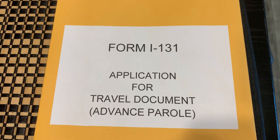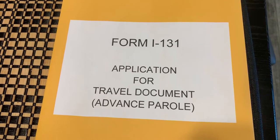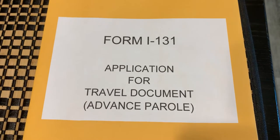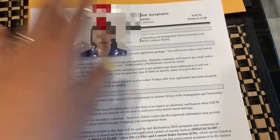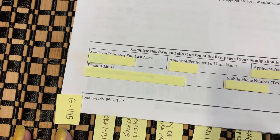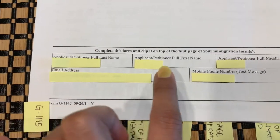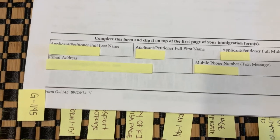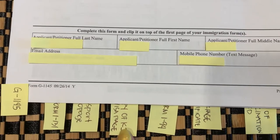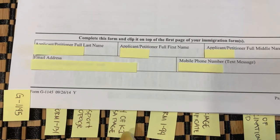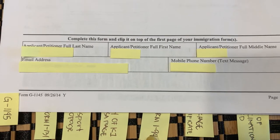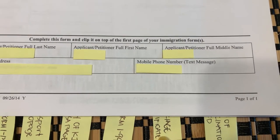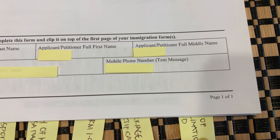Next is Form I-131, the Application for Travel Document or Advance Parole. The contents of this folder: first, my photo on the front page, then the G-1145 form with my information. After that is the Form I-131 itself — five pages — then my passport bio page, copy of my K-1 visa page, my Form I-94, our marriage certificate, and a copy of my vaccination card.